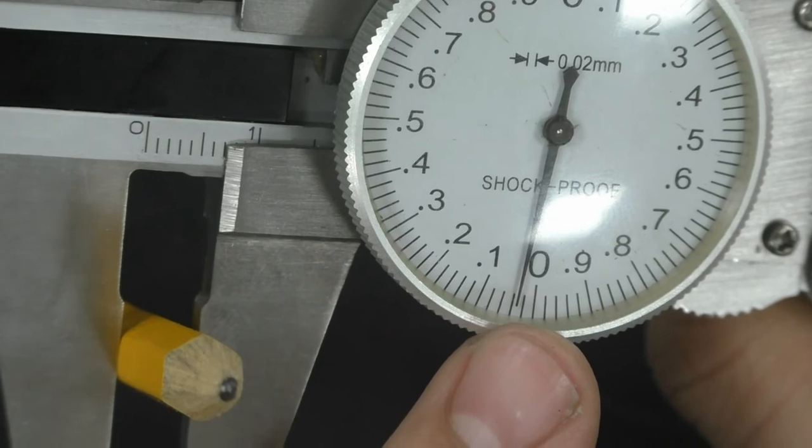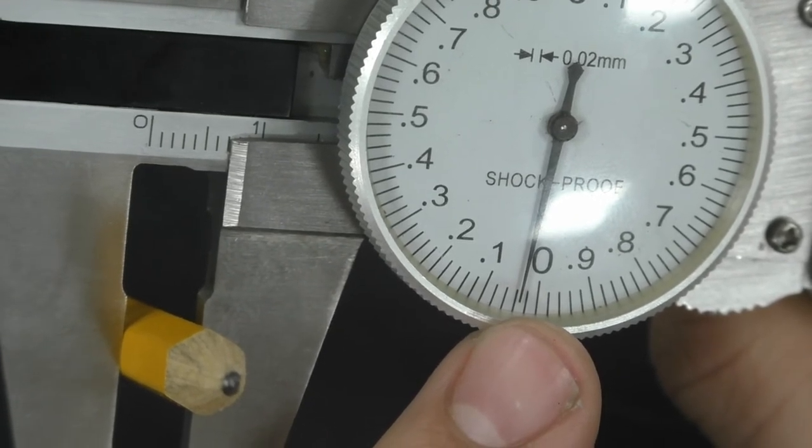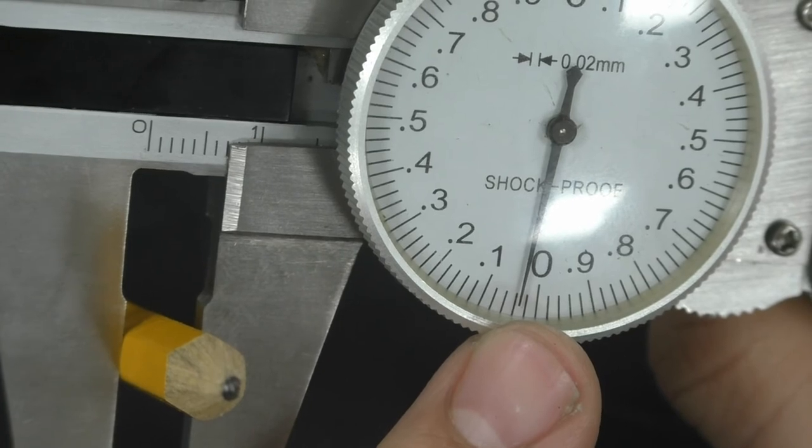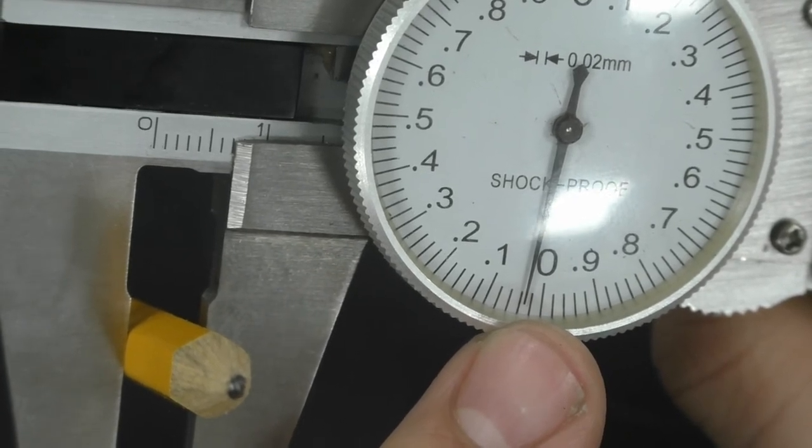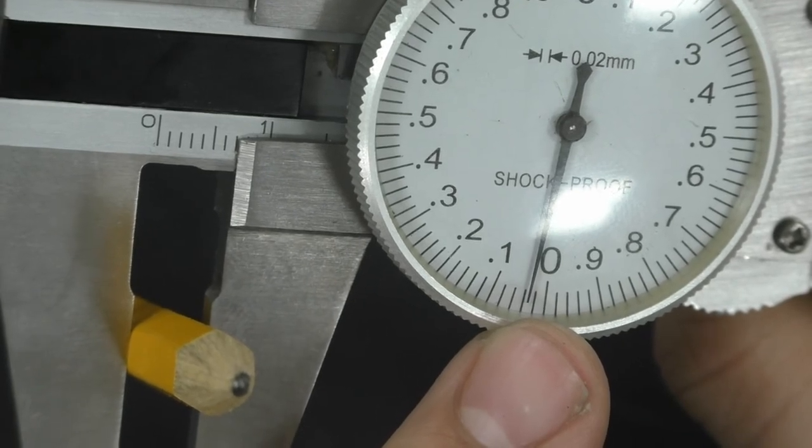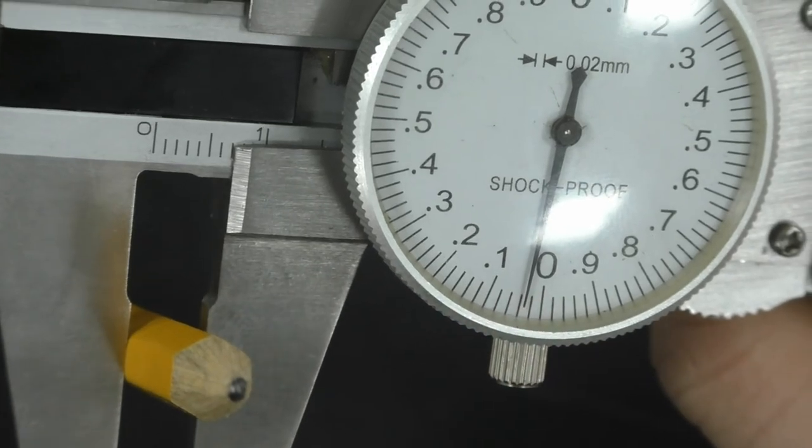And the needle is right in between the second and first tick after the zero. So we have 7.0, 0.02, plus 0.01 millimeters, since we're halfway in between. So our measurement is 7.03 millimeters.